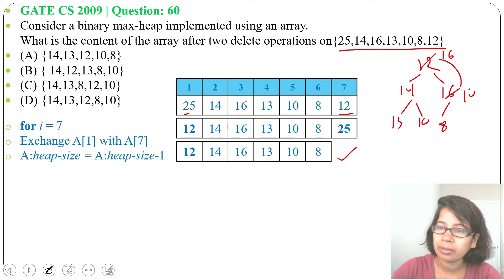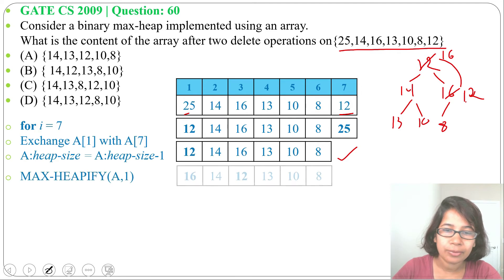Means 16 will be parent and 12 will come here. Next, 12 is greater than 8 so it's fine. So after maxify, 16 will be parent of 14 and 12. So after one deletion we got this max heap. We need to do another deletion.